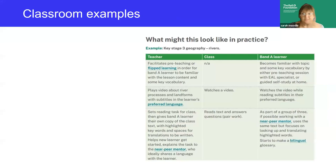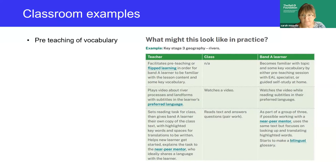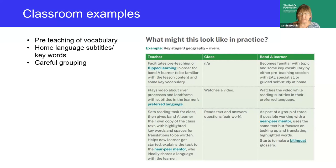Here you can see an example: a secondary key stage three band A learner in a geography lesson with a class studying rivers. The band A learner is included via some fairly simple adaptations — some flipped learning of vocabulary, some video subtitles in her home language, and some careful grouping for class work. So with some very simple strategies, the band A learner is included in a key stage three lesson.